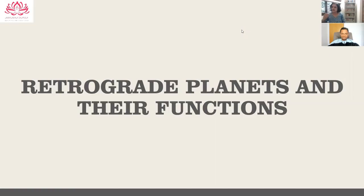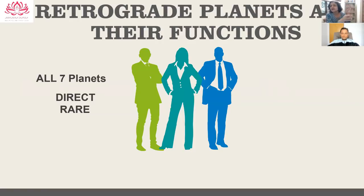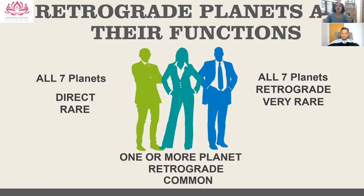Retrograde planets placed in different houses, ownership of different houses — all give various results. But today I'm taking up a very basic cause. When all seven planets in a chart are direct, that is a very new energy. That person has started with comparatively new energy from past life, having finished a lot of actions without carrying much overdue forward.